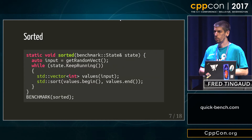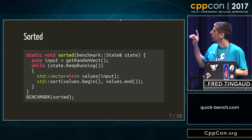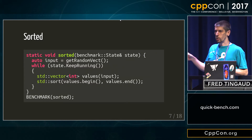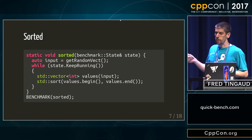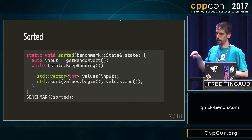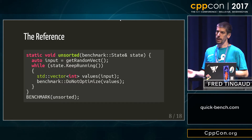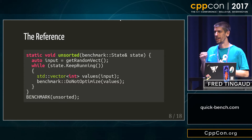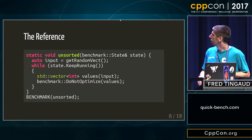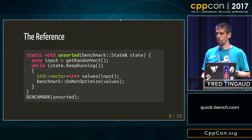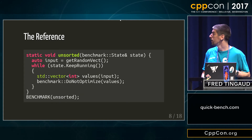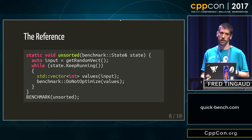The sort benchmark will look like that. I get my random vector, and inside the while loop I'm going to copy it and sort it. I'm copying it each time because I don't want to run multiple times on an already sorted vector. Since I'm copying and sorting but only want to benchmark the sort part, I'm going to make a reference with just the copy to see if it makes any difference.